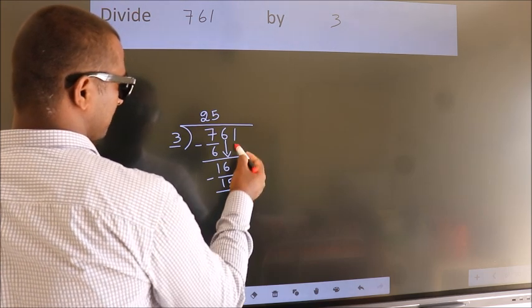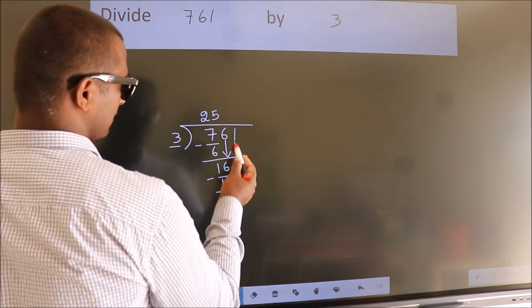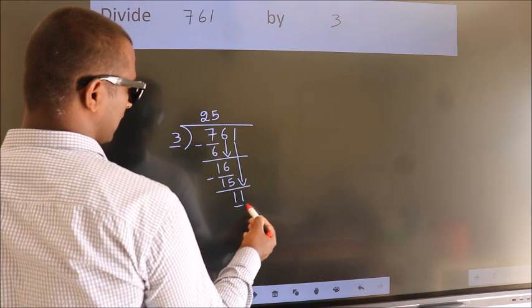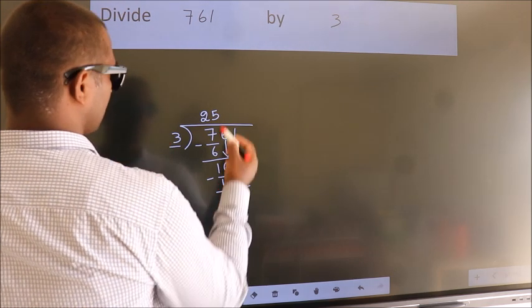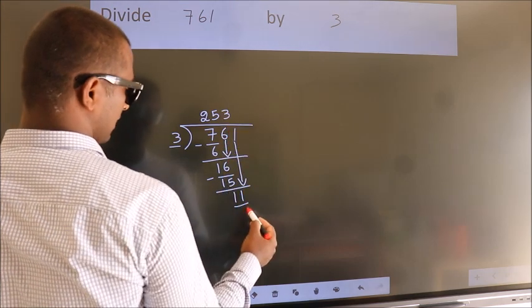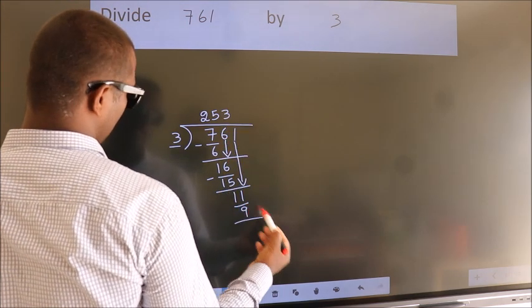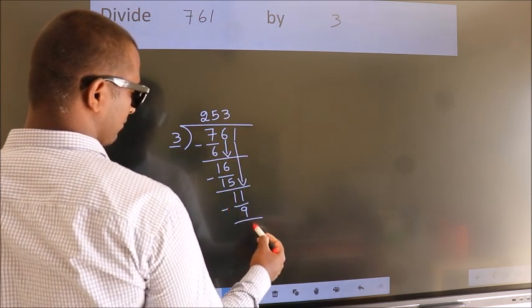After this, bring down the beside number. So, 1 down. So, 11. A number close to 11 in the 3 table is 3 threes 9. Now we subtract. We get 2.